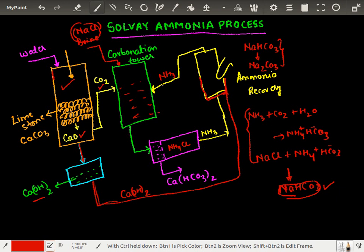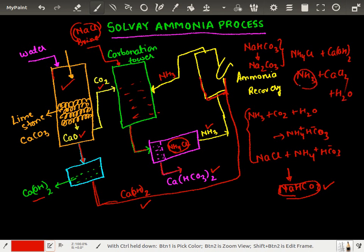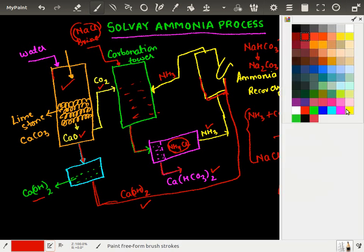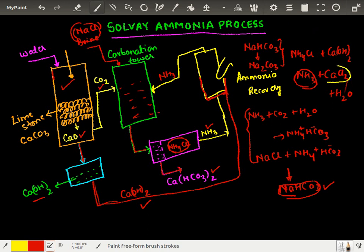Ammonia is recovered from here. At the end of the carbonation tower, we get two things: sodium bicarbonate, which being sparingly soluble is filtered off, and the remaining ammonium chloride, which reacts with calcium hydroxide in the ammonia recovery tower. The reaction is the regeneration of ammonia: NH4Cl plus calcium hydroxide gives us ammonia plus calcium chloride plus water. Ammonia is recycled, meaning the only byproduct of the reaction is calcium chloride.